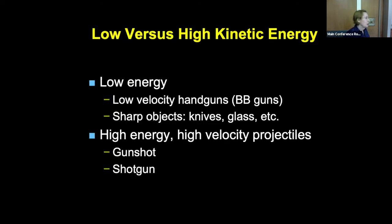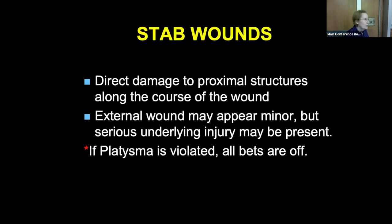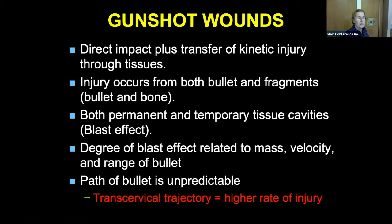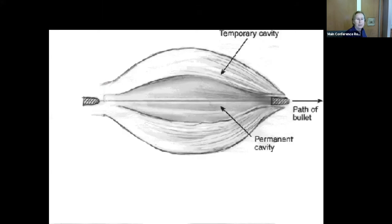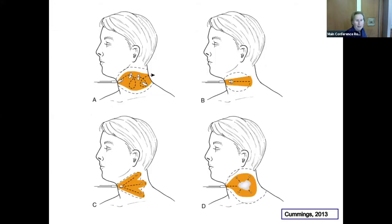For stab wounds, it's direct damage to the proximal structures they pass through. The external wound may appear to be nothing, but it could be a very serious injury. For gunshot wounds, there's the direct impact plus injury from bone fragments and bullet fragmentation. There's the permanent cavity and a temporary cavity from the blast effect. The path is completely unpredictable — bullets roll around, everything fragments, anything could be injured. In general with gunshot wounds, you have to consider anything is possible.